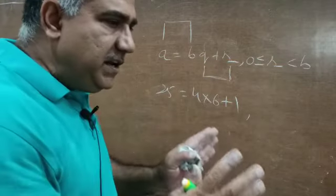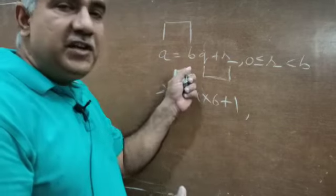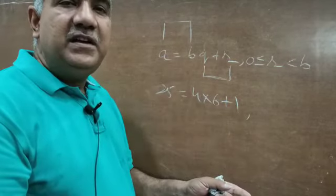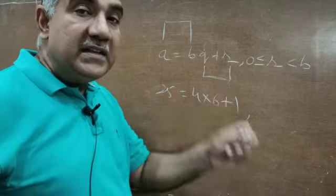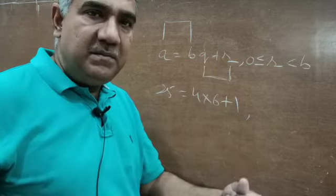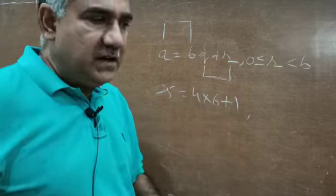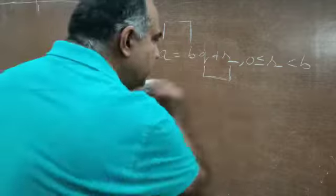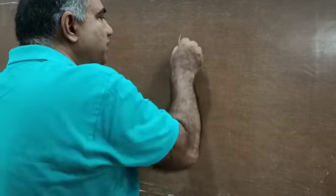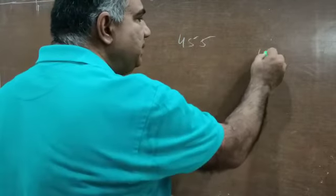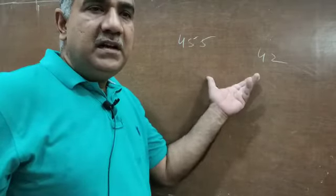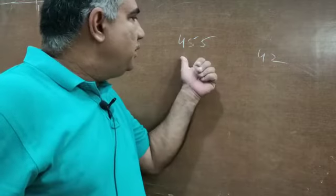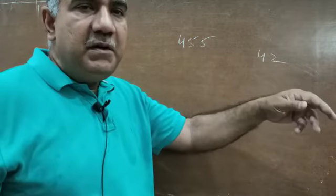So when a and b are fixed, q and r are also unique. For 25 as dividend and 4 as divisor, the quotient cannot be other than 6 and the remainder cannot be other than 1. Now we come to Euclid's Division Algorithm. Let's take two numbers: 455 and 42. By applying Euclid's Division Lemma to these numbers we can find out the HCF of 455 and 42.